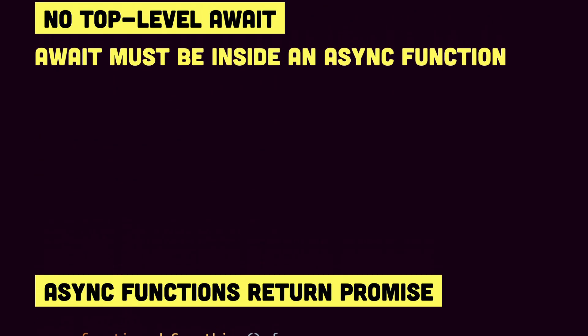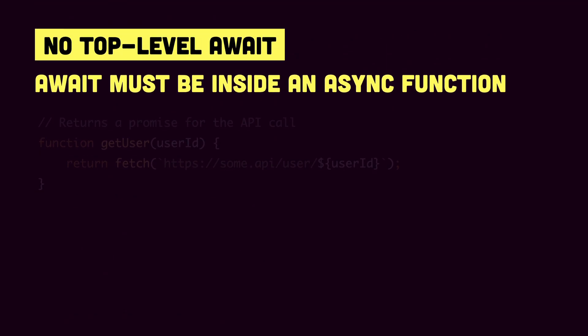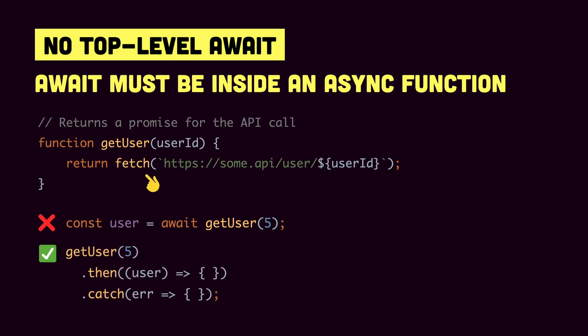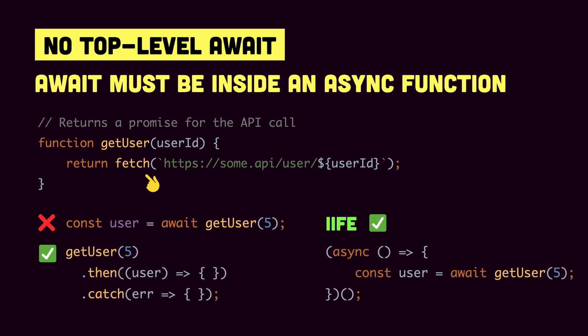Next, await can only be used within an asynchronous function. Say we have a function called getUser that makes a fetch call to a remote API. We cannot put await outside any asynchronous function. To use this function we either do a promise call with .then(), or use an IIFE — an anonymous function that calls itself — which is asynchronous, and inside that we make the call using await.